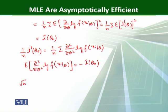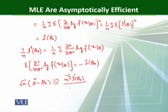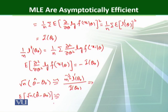Putting these results together, under root n times (theta hat minus theta naught) is approximately equal to n to the power minus one-half times L dash theta naught, over I of theta naught. Taking the expected value of both sides, the expected value of under root n times (theta hat minus theta naught) equals the expected value of the numerator divided by I of theta naught, which we proved equals 0.